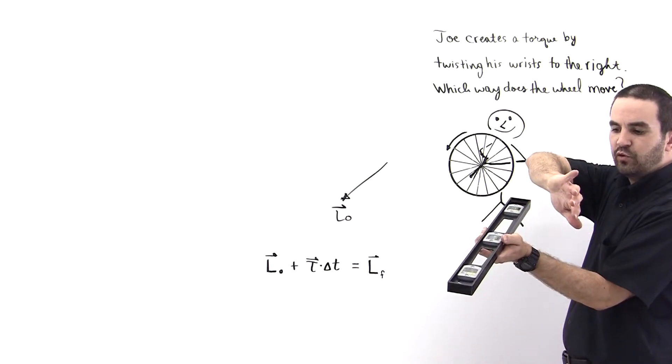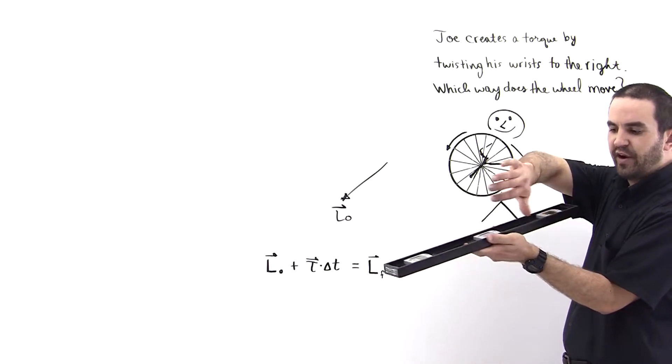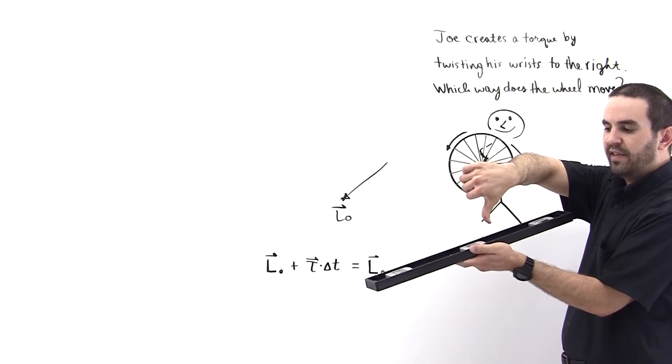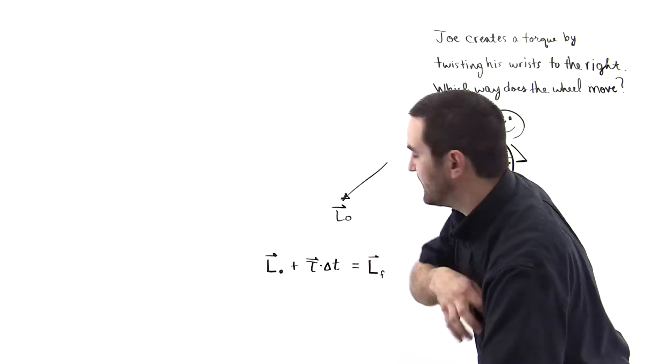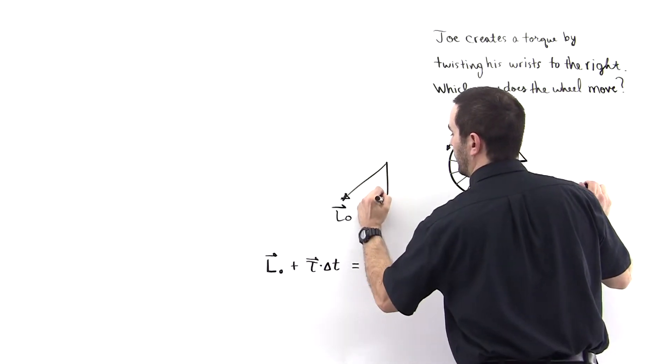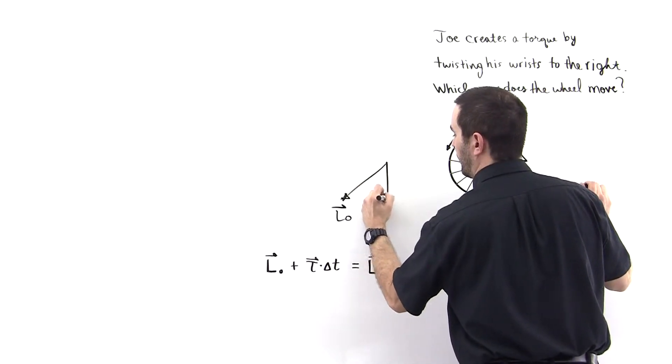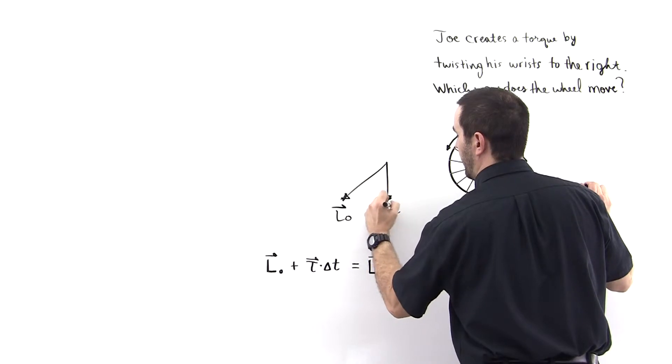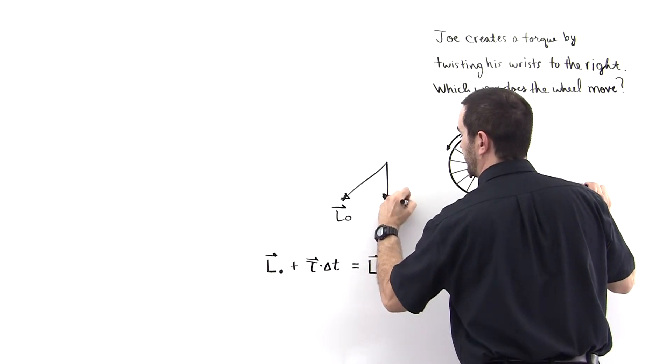So you take your right hand and you just curl your fingers in the direction that the bar is rotating and the thumb is down. So that means that the torque impulse is down. Like so. So this is tau delta T.